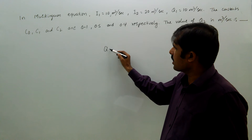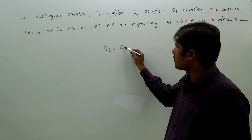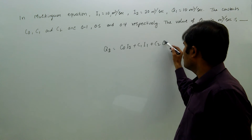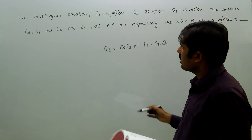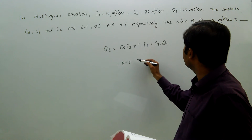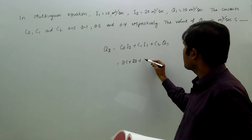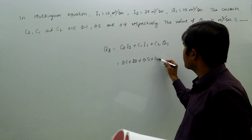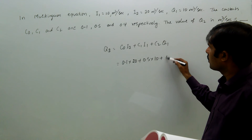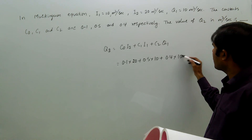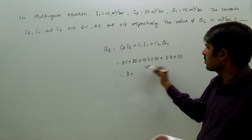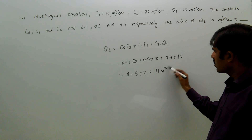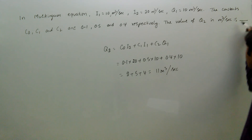According to the Muskingum equation, Q2 equals C0·I2 plus C1·I1 plus C2·Q1. Substituting: C0 is 0.1 into I2 is 20, plus C1 is 0.5 into I1 is 10, plus C2 is 0.4 into Q1 is 10. That equals 2 plus 5 plus 4, which is 11 cubic meters per second. So the answer is 11.